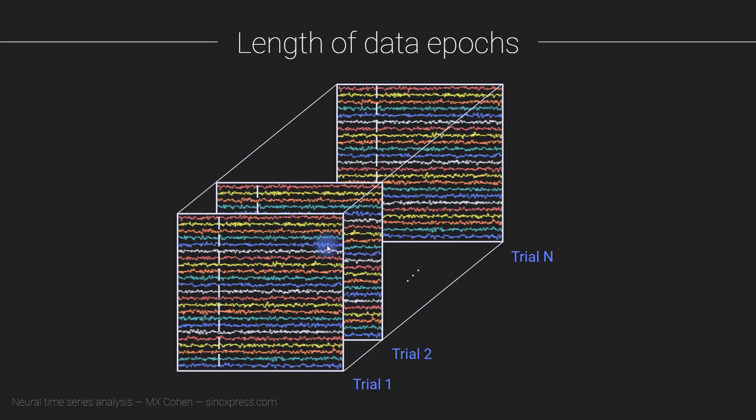So that means that there will be edge effects potentially contaminating the data. Now whether you get an edge effect that's really, really large or relatively small depends on the size of the edge relative to the other dynamics in the signal. So if the edge is really tiny and the features in the signal are relatively large, the edge effect will be tiny and probably unnoticeable.